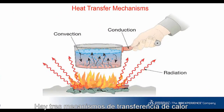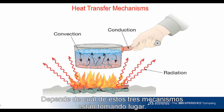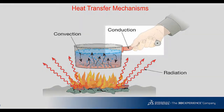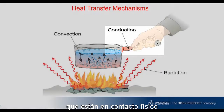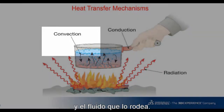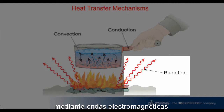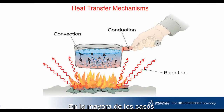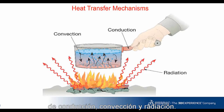There are three mechanisms of heat transfer: conduction, convection, and radiation. The choice of simulation tool to use depends on which of these three mechanisms are taking place. Conduction is the transfer of energy between solids that are in physical contact. Convection is the transfer of energy between a solid and its surrounding fluid. Radiation is the transfer of energy from a solid to ambient or between solids by electromagnetic waves. In most cases, heat transfer problems involve a combination of conduction, convection, and radiation.